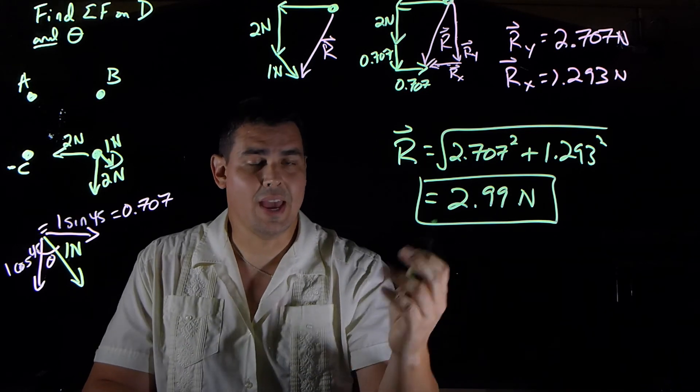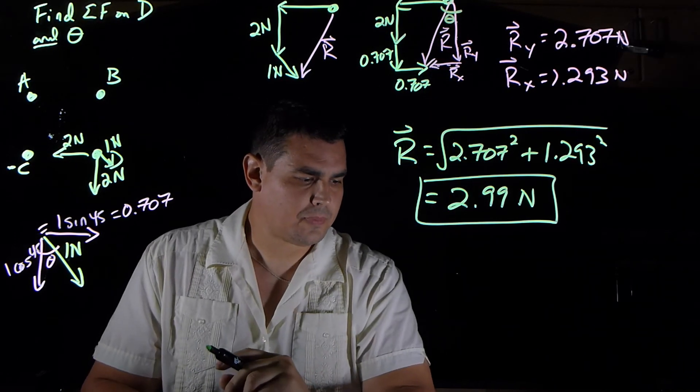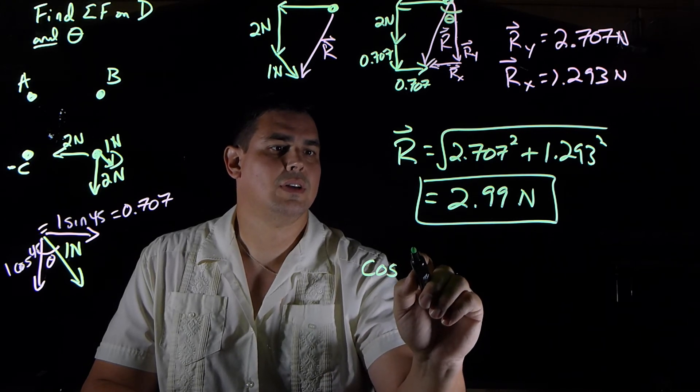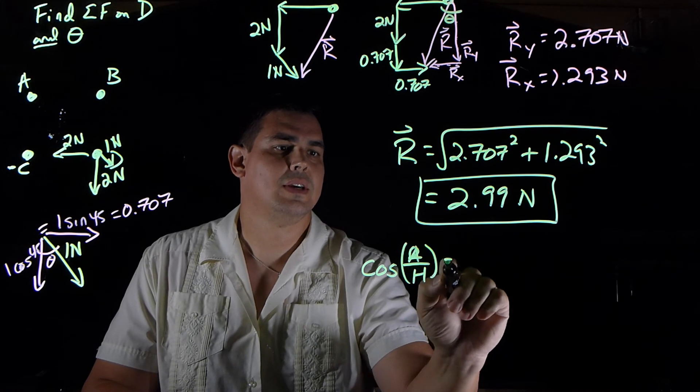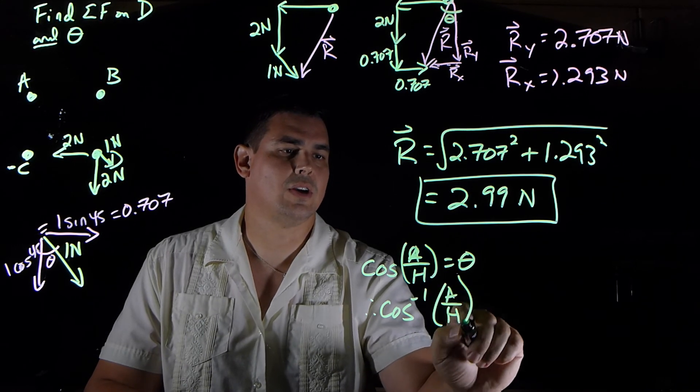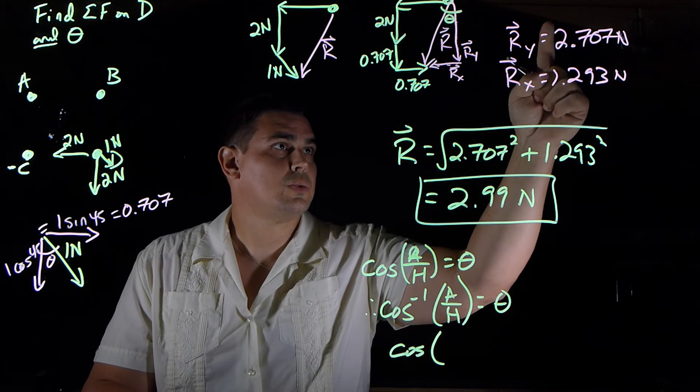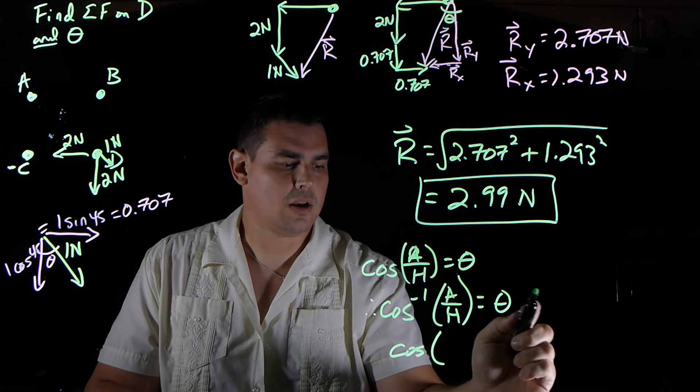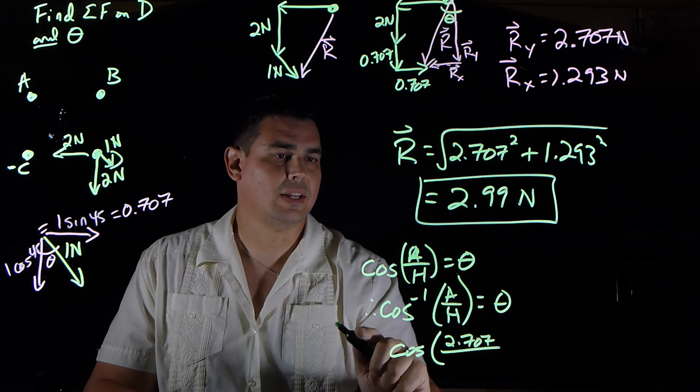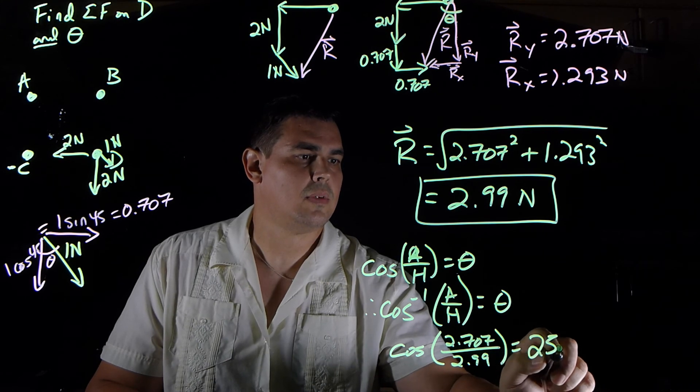And so same thing now. If I want the angle, let's say I'm going to pick cosine. So let's say this is my angle. I'll use cosine this time. So I know adjacent over hypotenuse is equal to the cosine of the angle. So if I took the inverse cosine of the adjacent over hypotenuse, or the arc cosine, that would give me my angle. So the arc cosine of 2.707 over the hypotenuse, which is 2.99, that comes out to be 25.5 degrees.